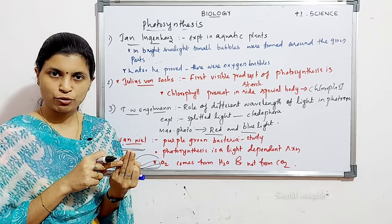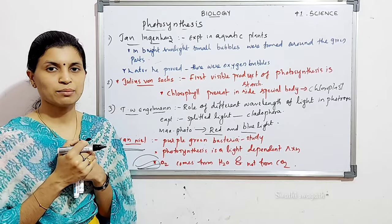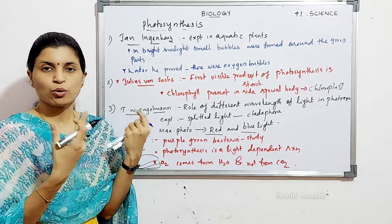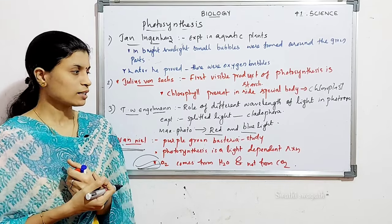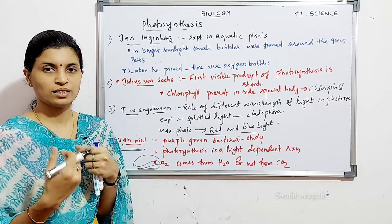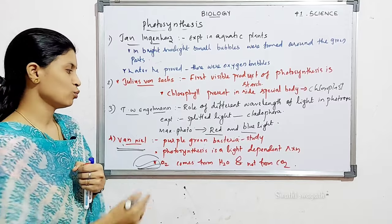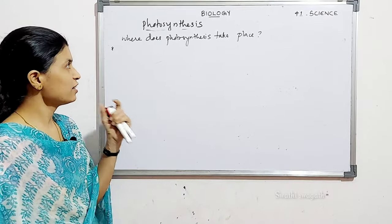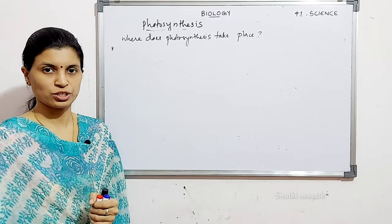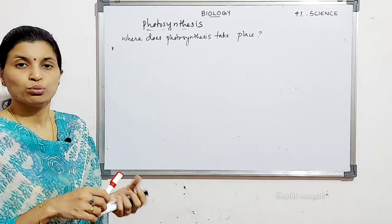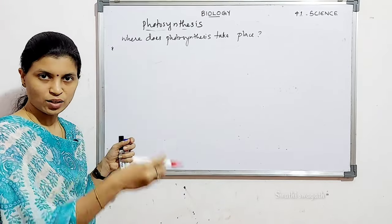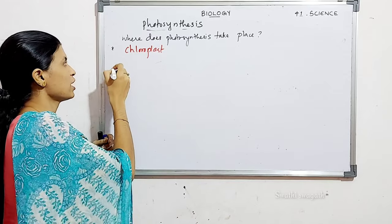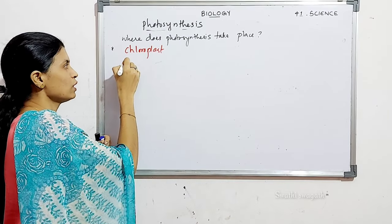Water, CO2, and chlorophyll are essential for performing photosynthesis. The next heading is: where does photosynthesis take place? Photosynthesis occurs inside a special cell organelle called the chloroplast. The chloroplast has mainly two parts: the matrix part, called stroma, and the thylakoid, which forms a compound structure called the granum — the plural is grana. Grana are stacks of coin-like structures.